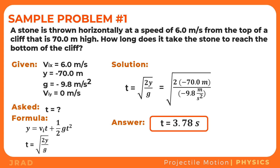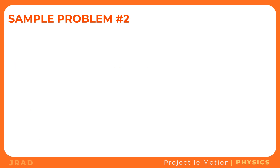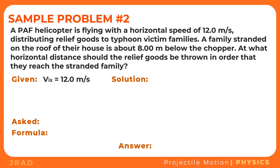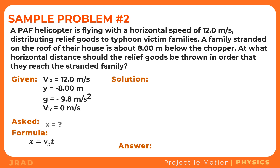Let's have another example. A helicopter is flying with a horizontal speed of 12 meters per second distributing relief goods to typhoon victim families. A family stranded on the roof of their house is about 8 meters below the chopper. At what horizontal distance should the relief goods be thrown in order to reach the stranded family? The given values are: initial velocity along x equals 12 m/s, height equals negative 8 meters, and acceleration due to gravity equals negative 9.8 m/s². Since the object is thrown horizontally, the initial vertical velocity is also zero. We need to find the horizontal distance x using x equals vx·t.